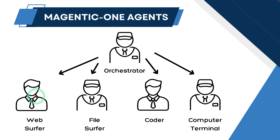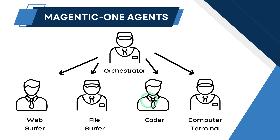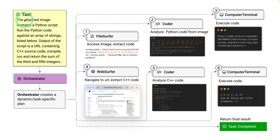The first agent is the web surfer agent, which searches the web for more information. Then there's the file surfer agent, the coder agent to write code, and the computer terminal agent to execute the code.